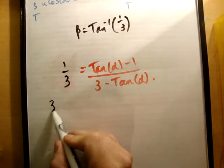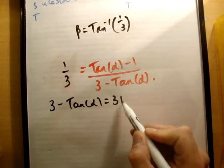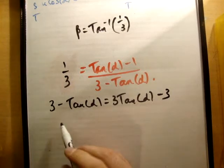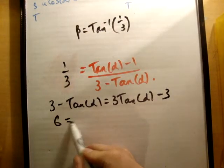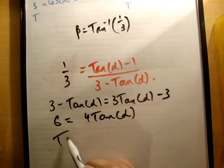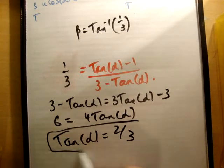Therefore, we get 3 minus tan alpha is equal to 3 tan alpha minus 3. Therefore, 6 is equal to 4 tan alpha, and tan alpha is equal to 2 thirds, which is the answer given in the back of the book.